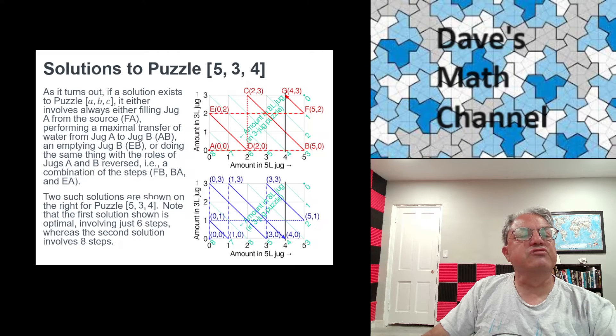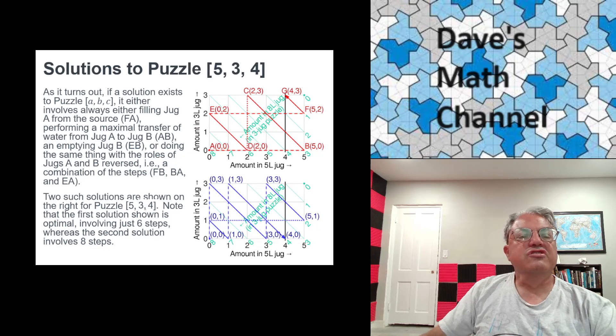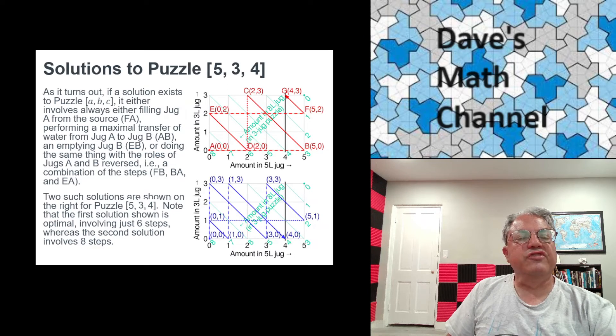And then the next step, the next thing we do is we transfer again. So now we go from D to E, which is another up diagonal going up to the left. We transfer the two liters of water in jug A to jug B. That takes us to state E, which is (0,2). Now jug A is empty and jug B has two liters of water. The next thing we do is we fill jug A again along this dashed arrow going to the right. And that takes us to state F, which is (5,2). Now jug A is filled with five liters of water. Jug B has just two liters of water.